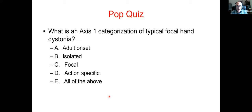For question one — what is the axis one categorization — the largest number of people voted for 'all of the above,' which is probably the best answer. There are multiple different features that add up to a syndrome for a particular entity: adult onset, isolated, focal, and action-specific are all individual features that make up the syndrome of focal hand dystonia.